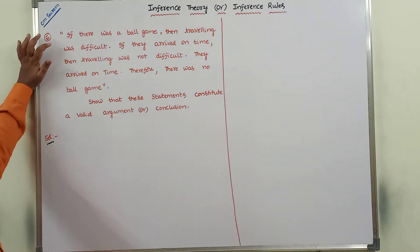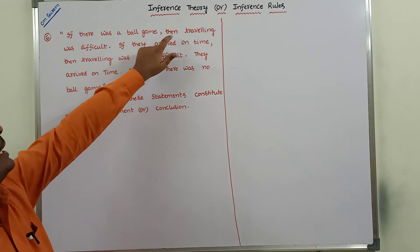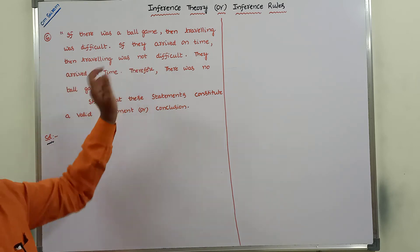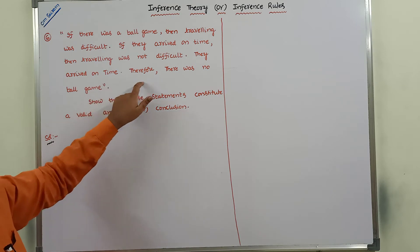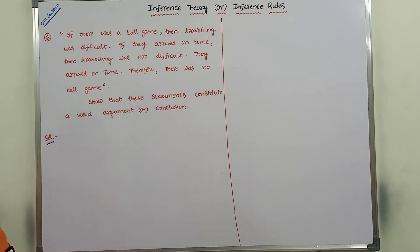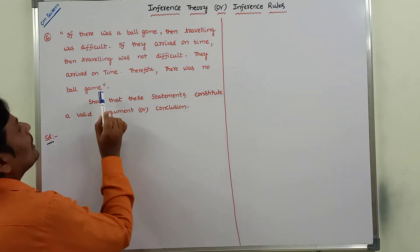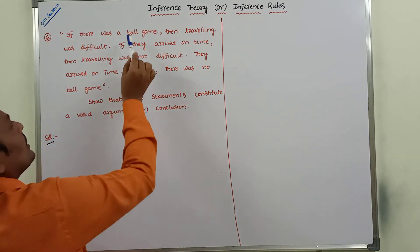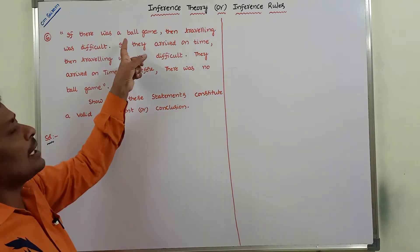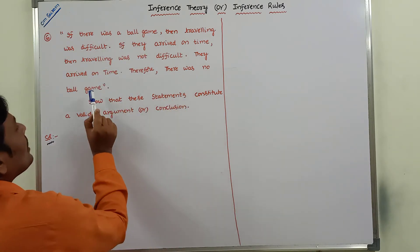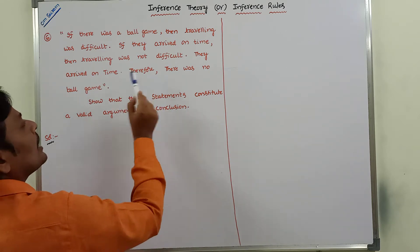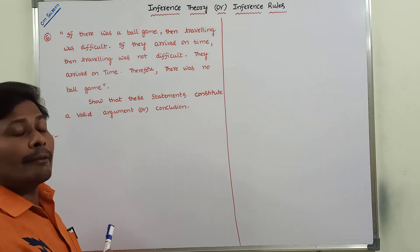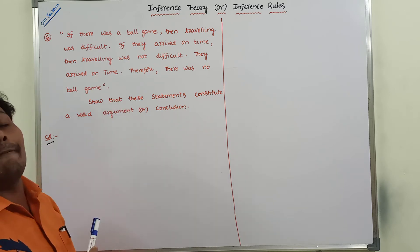The given statements are: if there was a ball game, then traveling was difficult. If they arrived on time, then traveling was not difficult. They arrived on time. Therefore, there was no ball game. Here, 'there was no ball game' is the conclusion. From the given statements, we have to derive this conclusion. If they derive that conclusion, then we can say that this conclusion is a valid conclusion. Otherwise, we can say that it was not a valid conclusion.